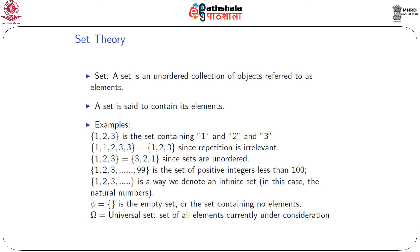Another set is {1, 2, 3, ..., 99} — we can say it is a set of positive integers less than 100. We can also have an infinite set where the number of elements is not finite. For example, {1, 2, 3, 4, ...} is a way to denote an infinite set; in this case, it is the set of natural numbers. It is not necessary that a set must always have an element. If we have a set which does not have any element, we call this a null set or empty set, denoted by φ. If φ is the null set, then we have another set called the universal set, denoted by Ω — the set of all elements currently under consideration.